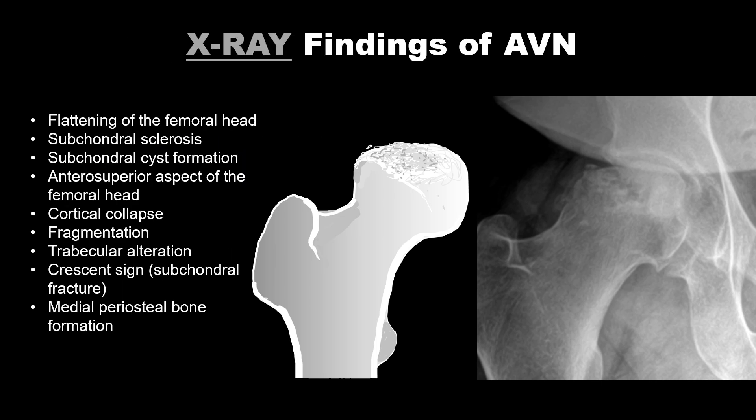Radiographic findings of AVN of the femoral head include flattening or deformity of the femoral head, subchondral sclerosis, subchondral cyst formation. The area usually involved is the anterior superior aspect of the femoral head, typically the 10 to 2 o'clock position. Additional findings include cortical collapse, fragmentation, trabecular alteration, medial periosteal bone formation along the femoral neck, and the crescent sign — a subchondral fracture of the femoral head.